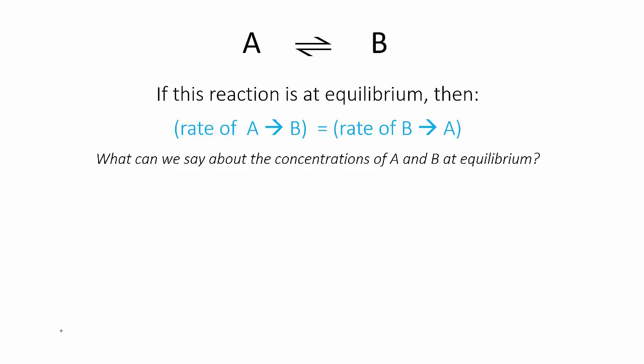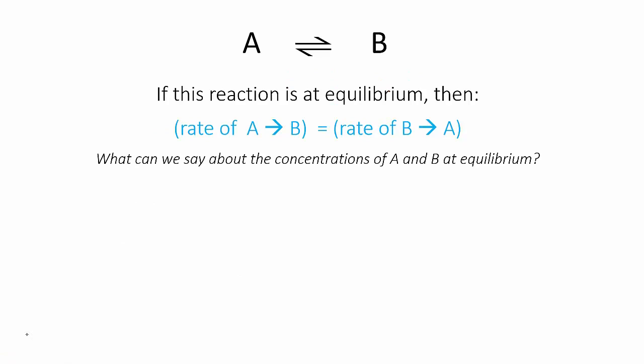Let's take a hypothetical reversible reaction: A goes to B. If this reaction were at equilibrium, it would mean that the rate of A turning into B was equal to the rate of B turning into A. What does that mean about the concentration of A at equilibrium — would they be the same? Think back to kinetics. Let's say that we know the rate laws of the forward and reverse reactions.